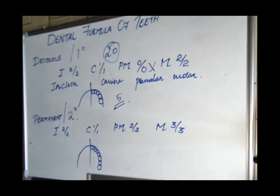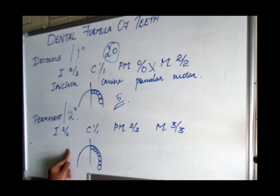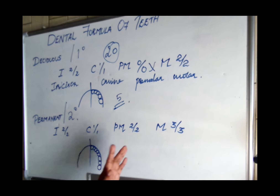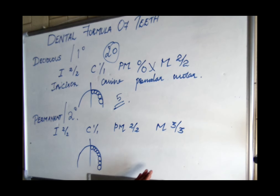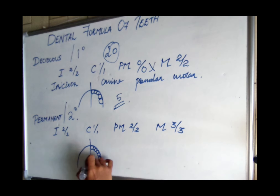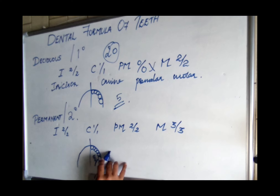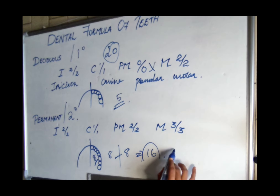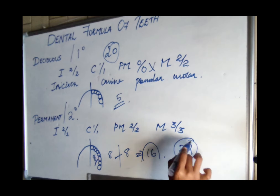For the permanent dentition, each quadrant has eight teeth: two incisors (central and lateral), one canine, two premolars (first and second), and three molars (first, second, and third). That gives eight teeth on one side; eight on the other side makes sixteen per arch, and a total of thirty-two.